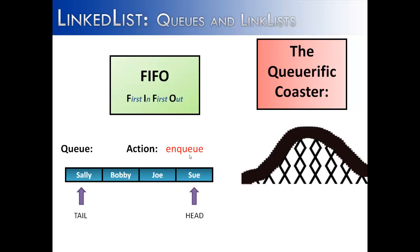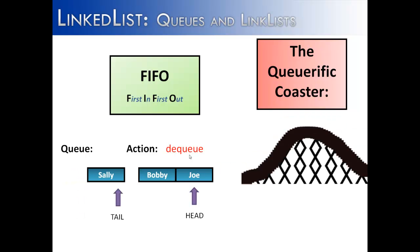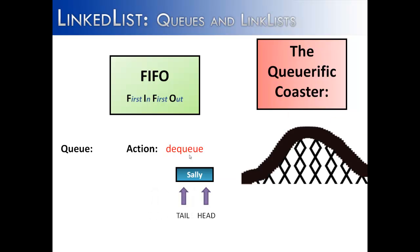Because Sue was the first person to enter into our queue, she's going to be the first person removed. Then Joe, then Bobby, and finally Sally. So there are really only two ways to access a queue. You can access the tail and put something after it if you want to insert something, or you can access the head in order to do two things: you can just see who's the next person in the queue, or you can remove that person from the queue.